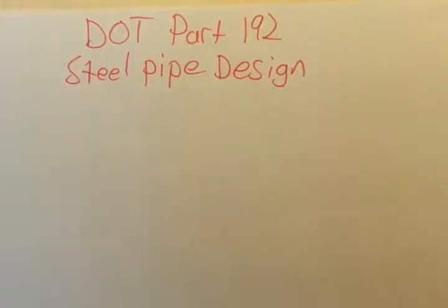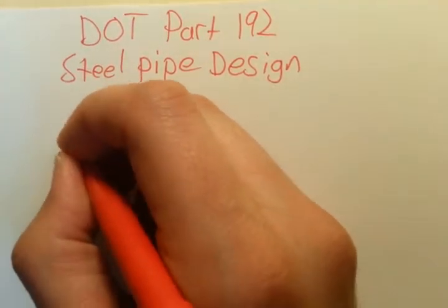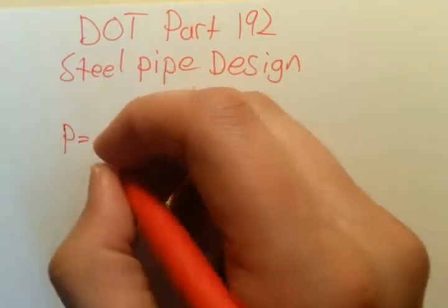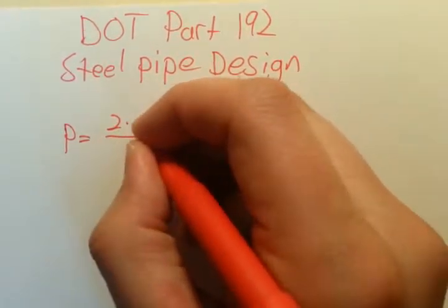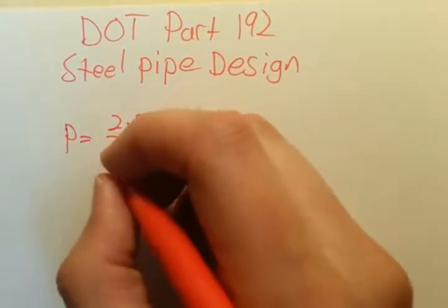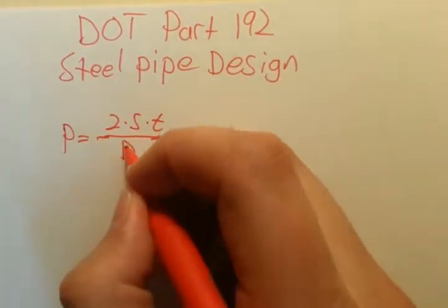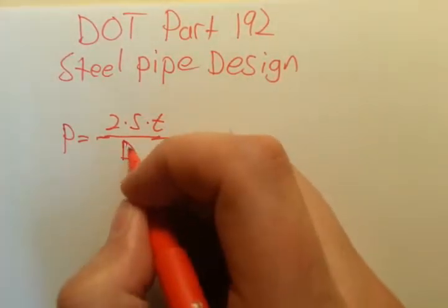Hello guys, welcome to DOT part 192 steel pipe design. We're going to go through the steel pipe design formula found in DOT 192 really quick. So we're going to write the formula: P equals 2 times S, which is yield strength, times T, which is wall thickness, all over capital D, which is outer diameter of the pipe.